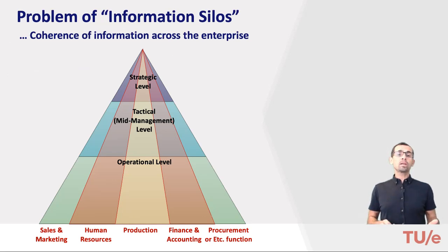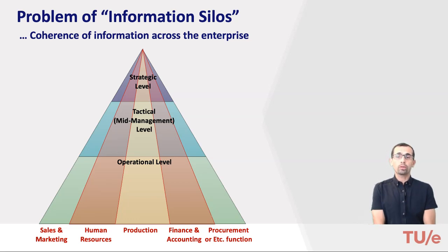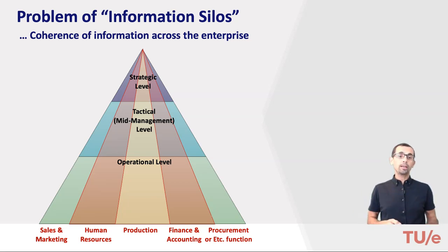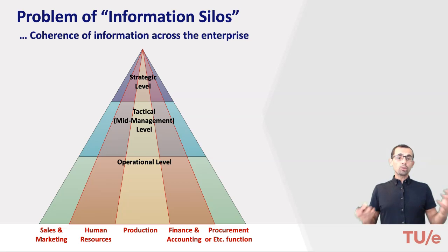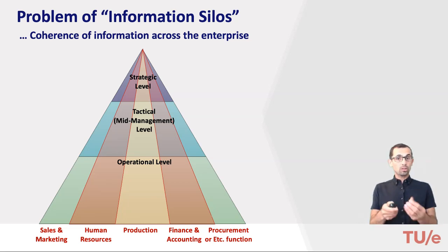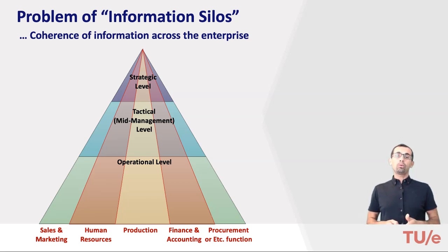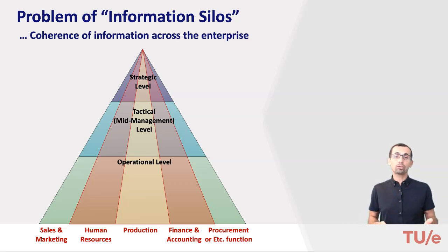As organizations become larger and more complex, specialized organizational functions emerge — we call them departments — like sales and marketing, human resources, production planning and control, finance, and so on. Next, specialized information systems and software for each function and each department were built or developed: inventory control systems, accounting systems, human resources management information systems, production planning and control systems, and so on.